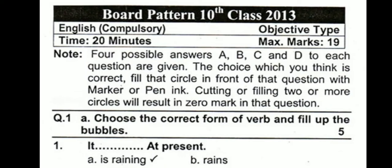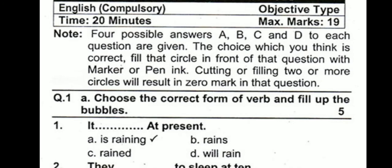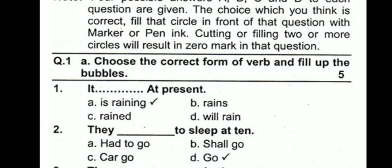Bismillahirrahmanirrahim. This is the third model paper that we are going to do today, and this is the objective part. Objective has 19 marks and the total time available is 20 minutes. You are given four options A, B, C, or D for each question. Remember that cutting or filling two or more circles will result in zero marks in that question, so don't do that.